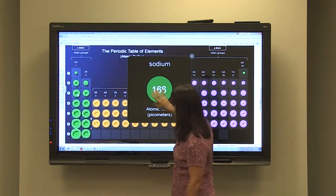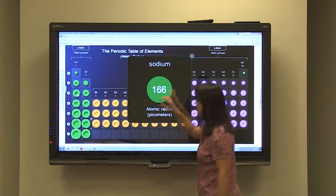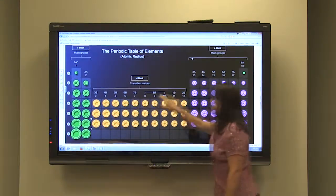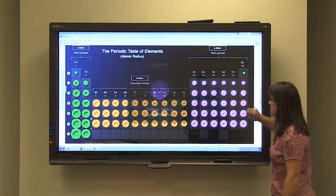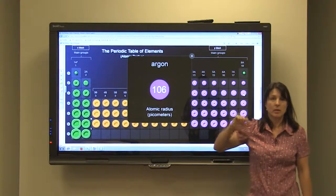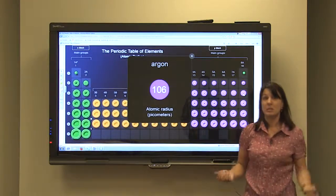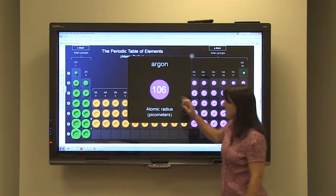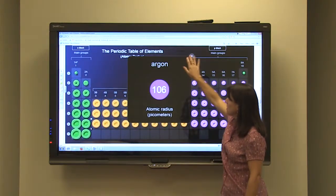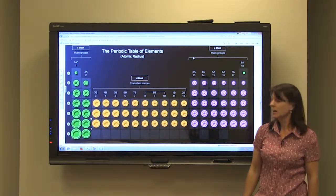So if we look at elements, sodium, for example, has an atomic radius of 166 picometers. And if we go to the other end of the period, we have argon, which has an atomic radius of 106 picometers. So there's a decrease there from 166 to 106 picometers. So that trend is the same across each row of the periodic table.